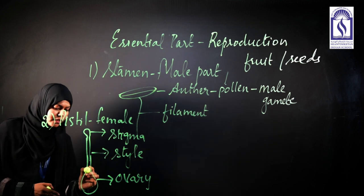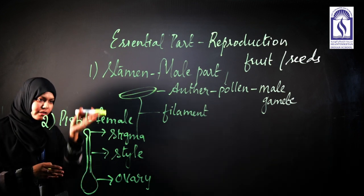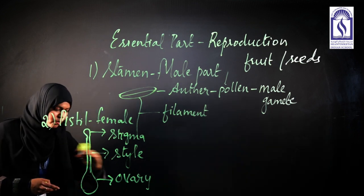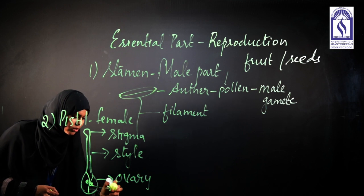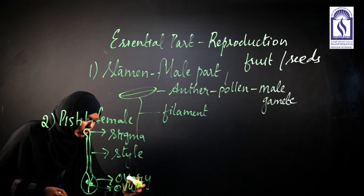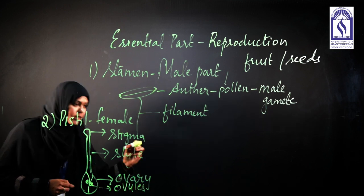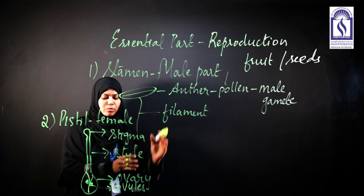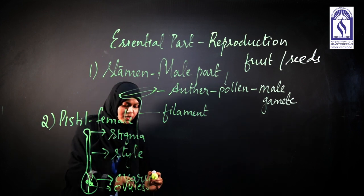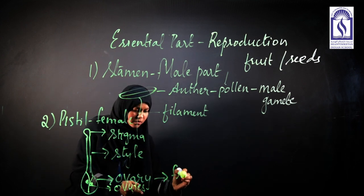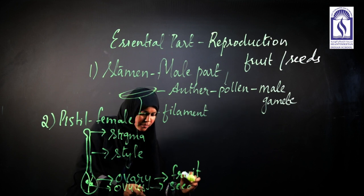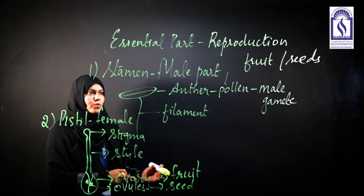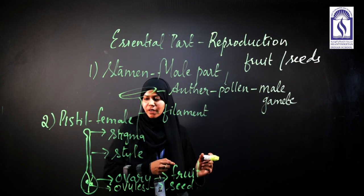Inside the ovary, if we cut it transversely or longitudinally, we can see certain small bead-like structures inside, which are known as ovules. After the process of reproduction, the ovary will change into the fruit and the ovules form the seed, which can be further used for the propagation of new plants.